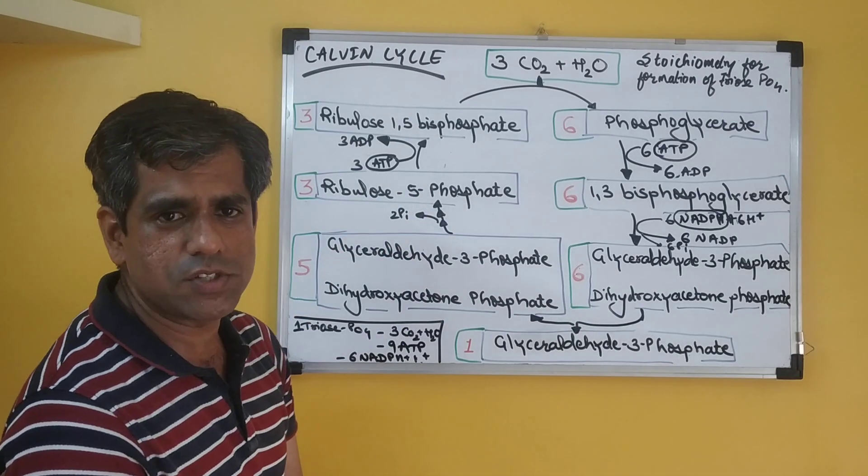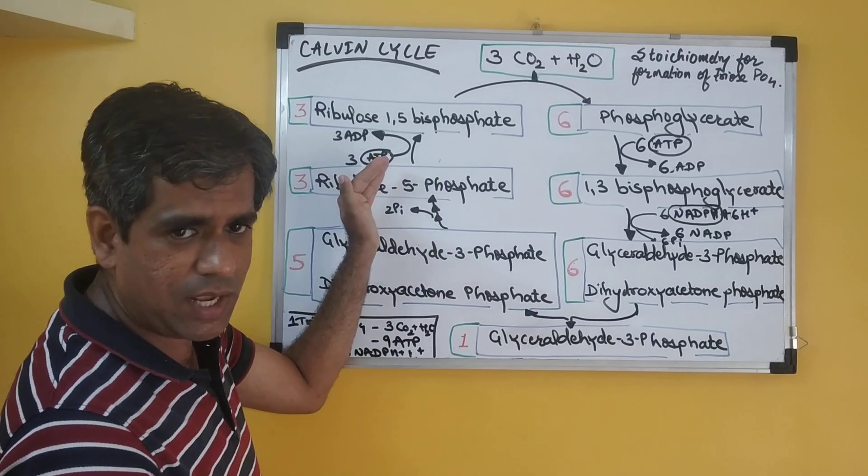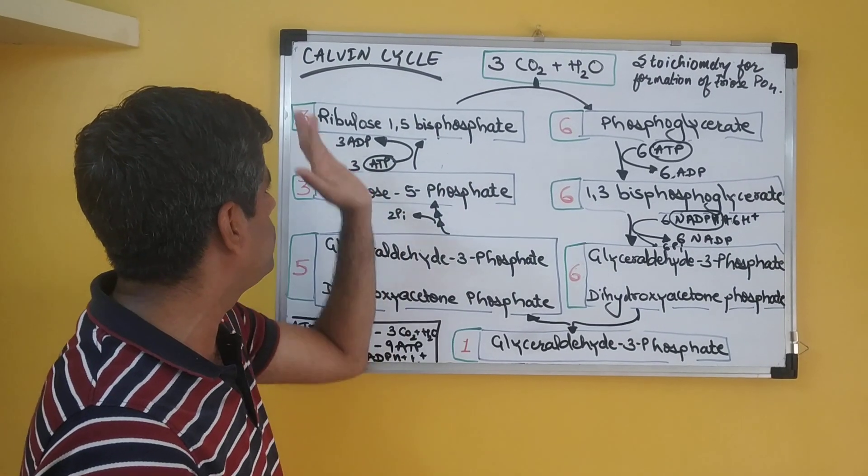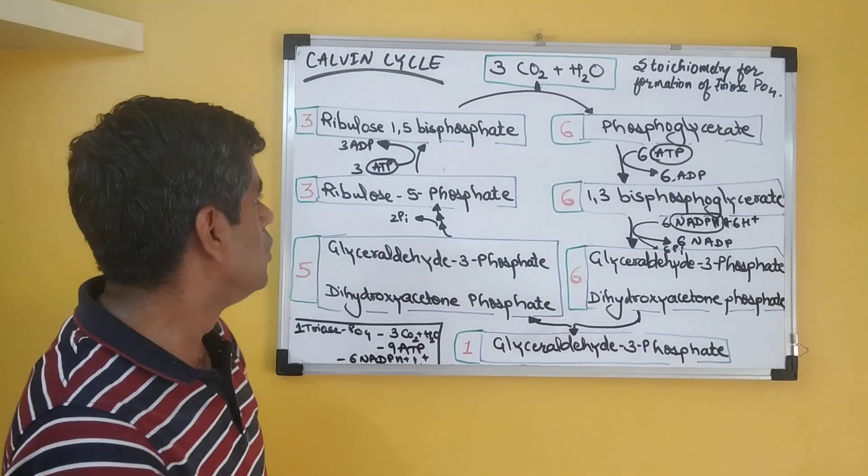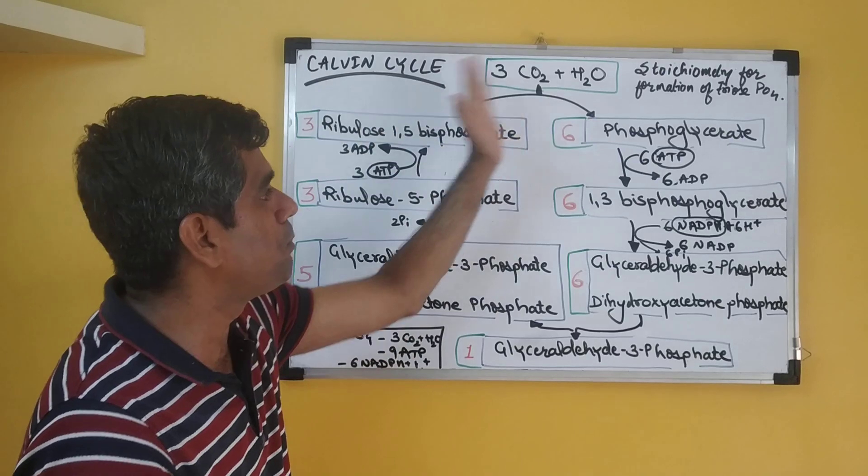These three molecules of ribulose-5-phosphate are converted or phosphorylated by ATP. We have used three molecules of ATP to convert this ribulose-5-phosphate to ribulose-1,5-bisphosphate, to form this first compound which was the initial acceptor completing the cycle.